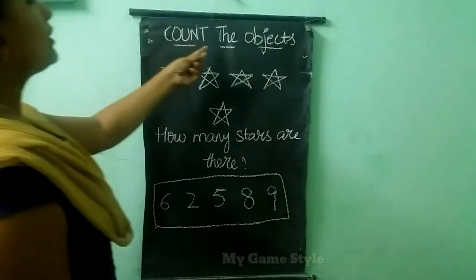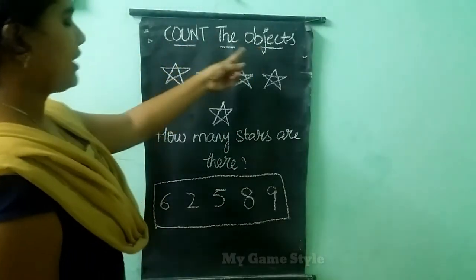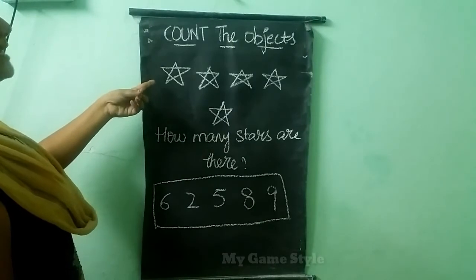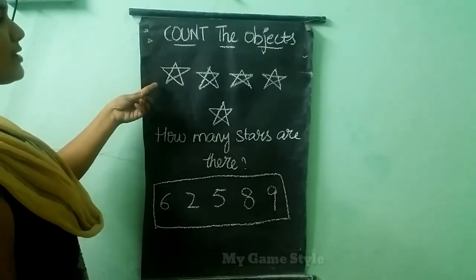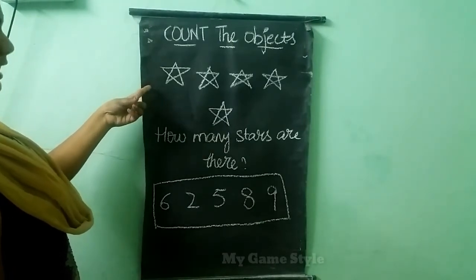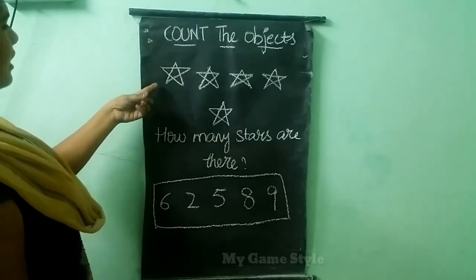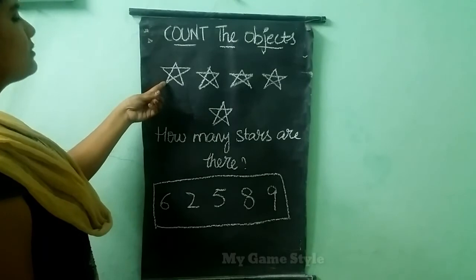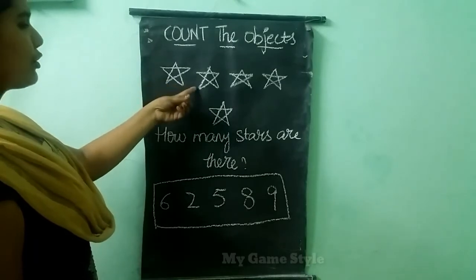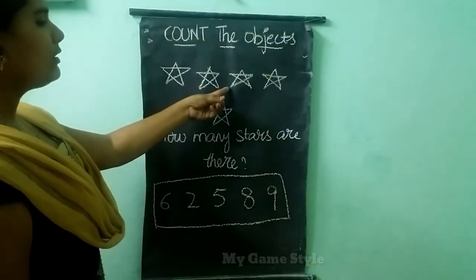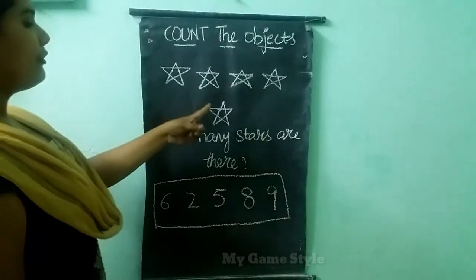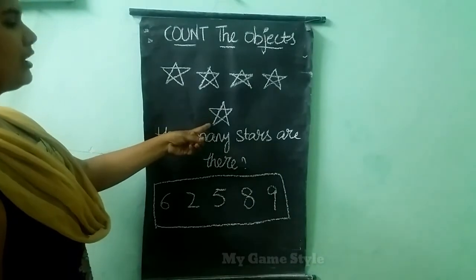Count the objects. Here how many stars are there, children? Let's count them. 1, 2, 3, 4, 5.